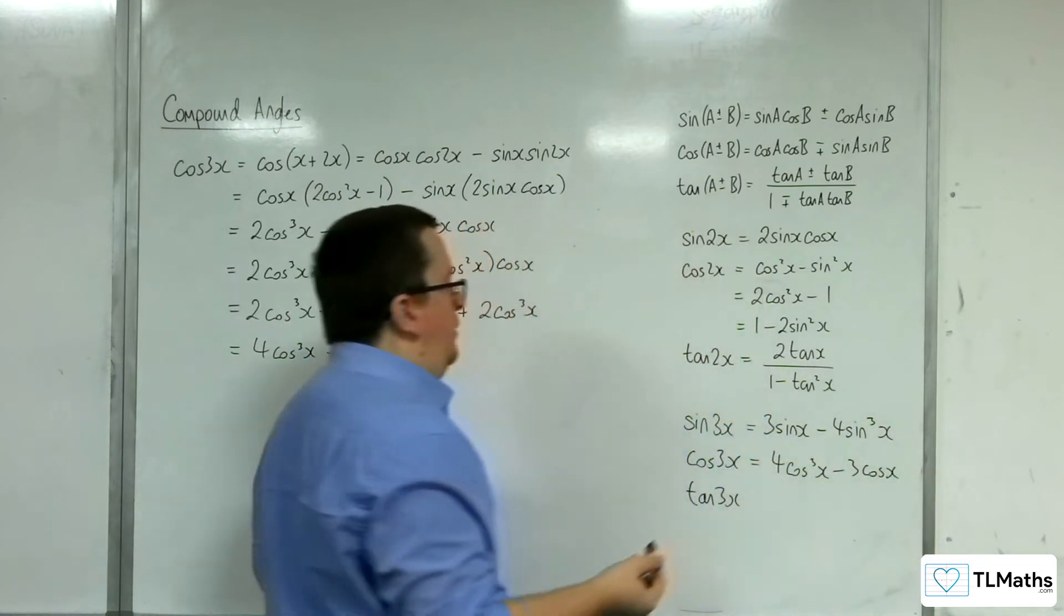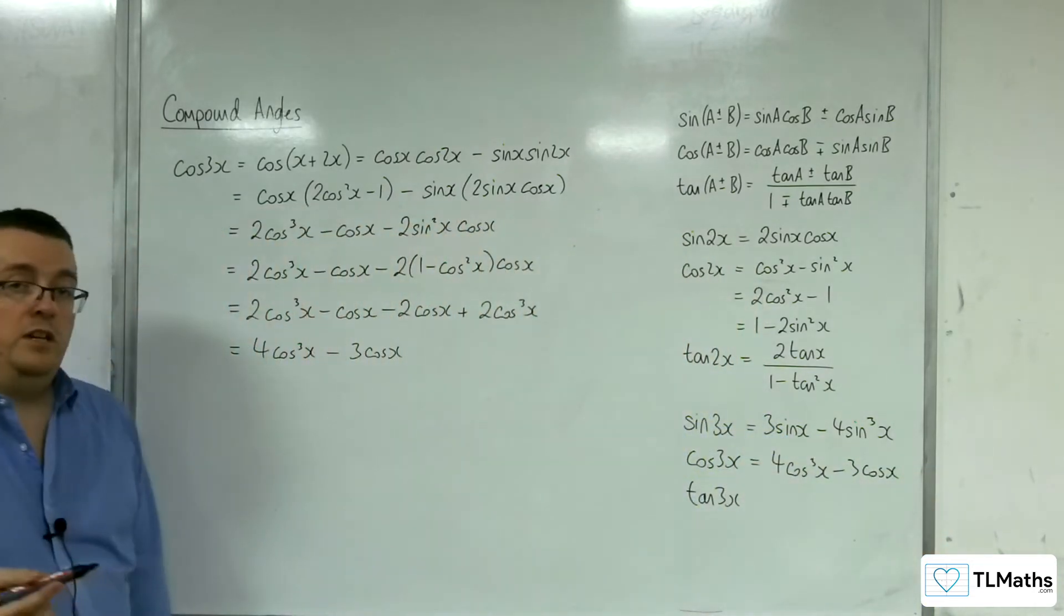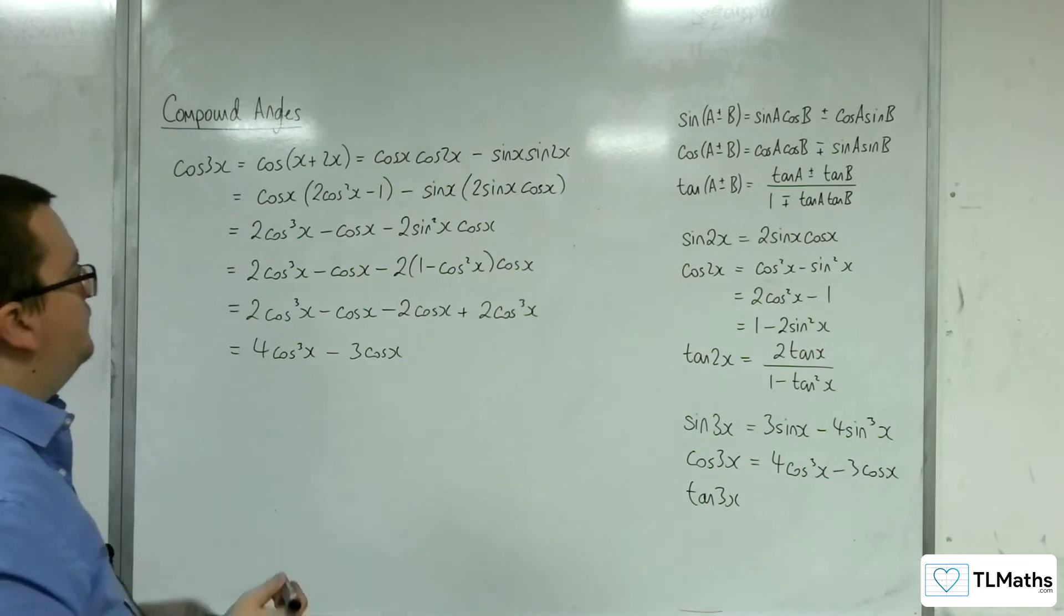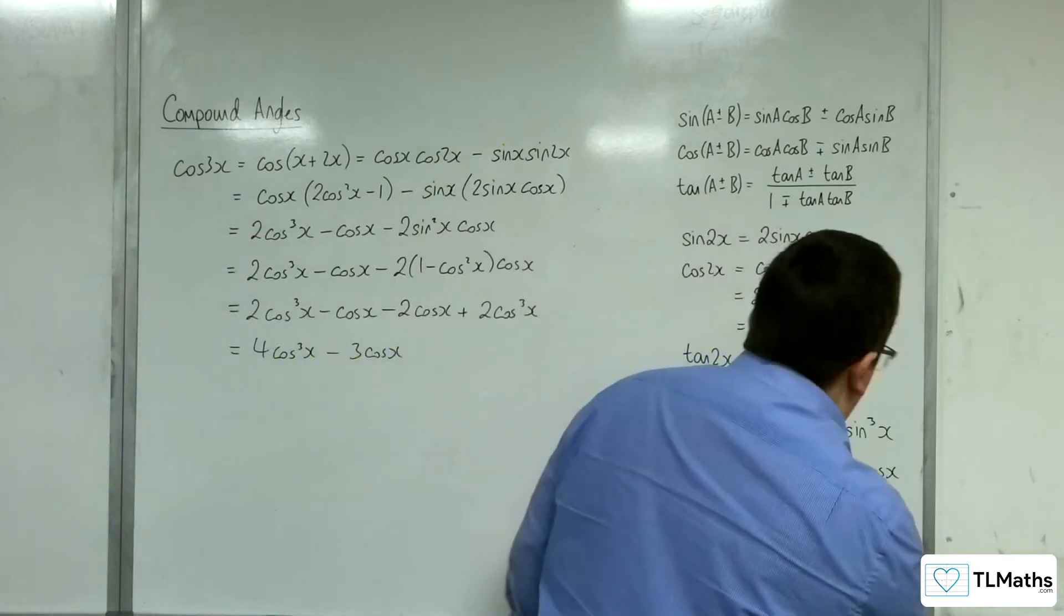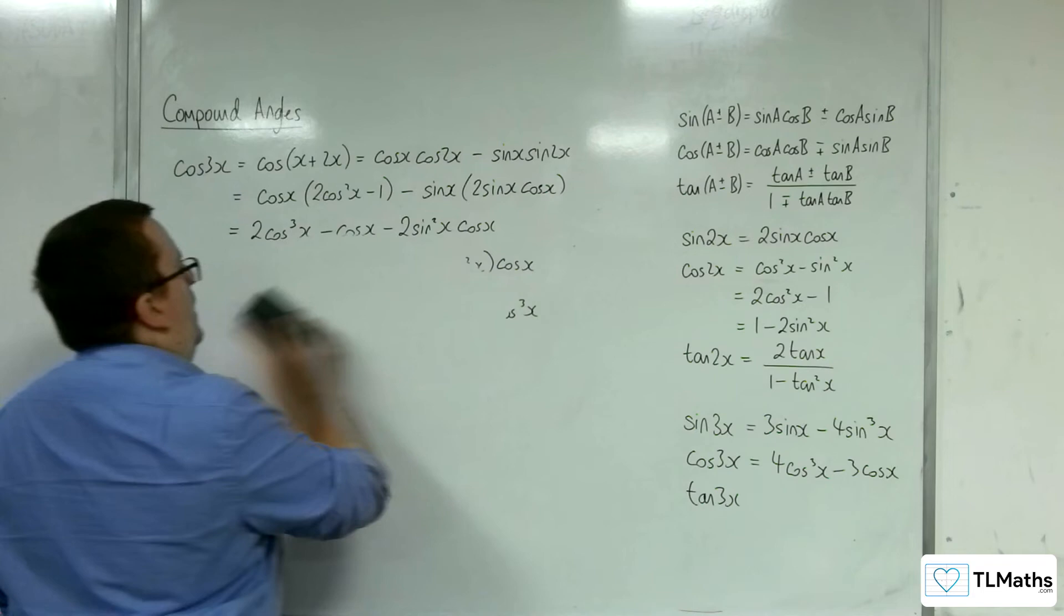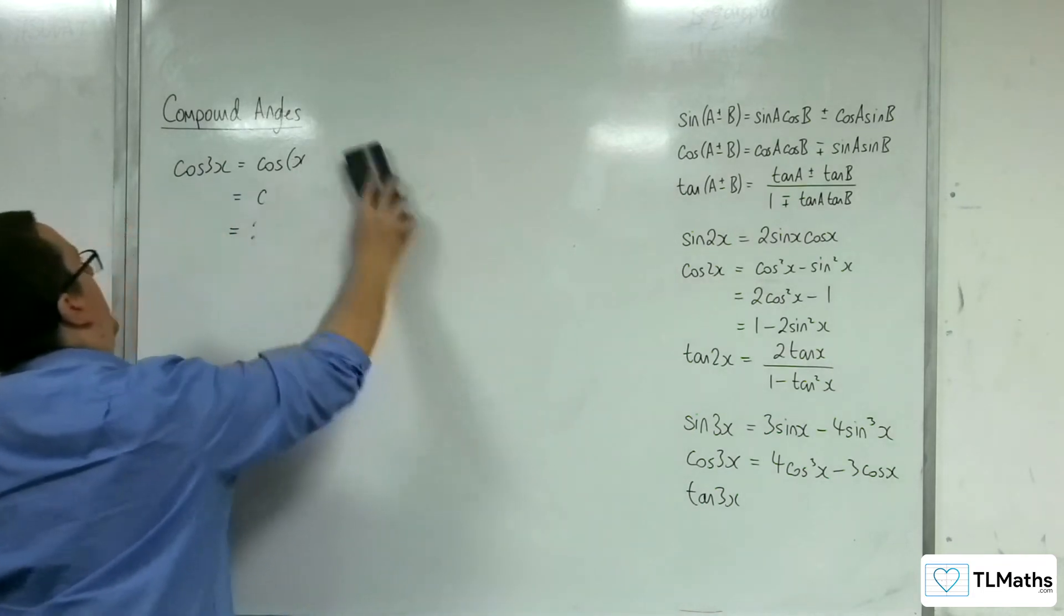Once again, you could use that to integrate cosine cubed. OK. That would be your method. Right, last one then. Tan 3x.